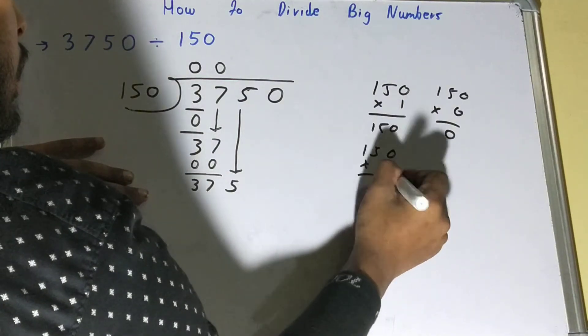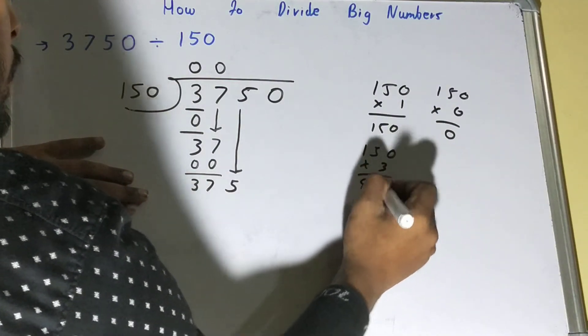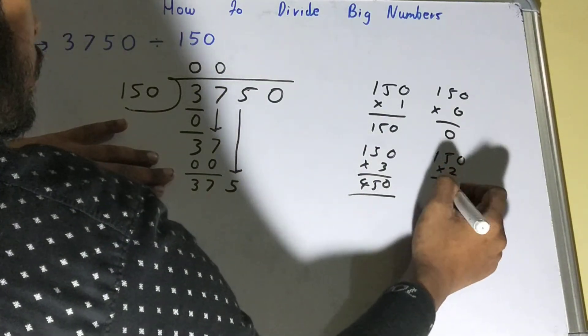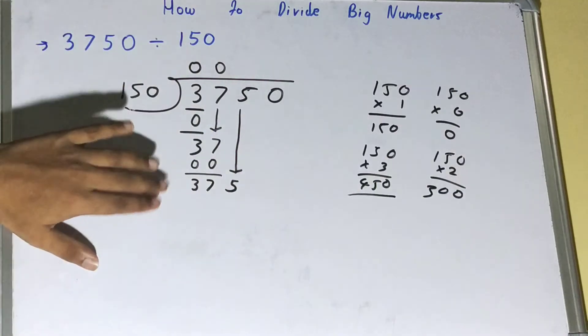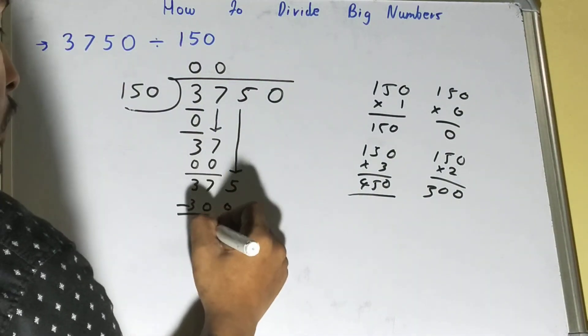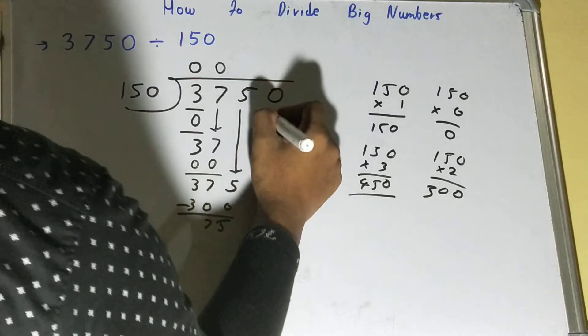Let's multiply it by 3 - 300, 450, which is bigger than 375. So let's multiply it by 2, so it will be 300, which is less than 375. So we'll use it, we'll be left with 75. We'll bring the last digit down.